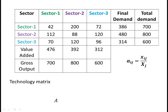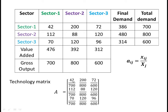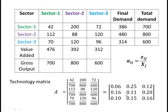Therefore, the technology matrix A is constructed as: 42/700, 200/800, 72/600 in the first row; 112/700, 88/800, 120/600 in the second row; 70/700, 120/800, 96/600 in the third row. This simplifies to the matrix with values 0.06, 0.25, 0.12 in the first row; 0.16, 0.11, 0.20 in the second row; and 0.10, 0.15, 0.16 in the third row. This is the technology matrix A.